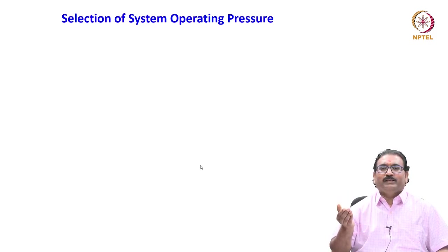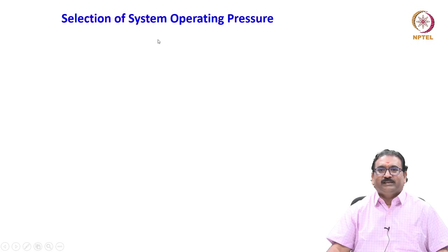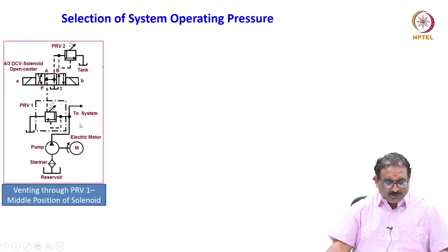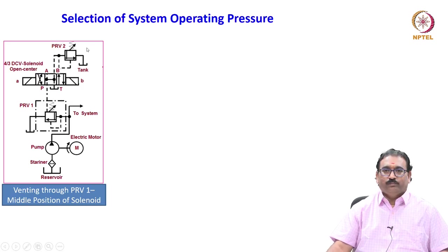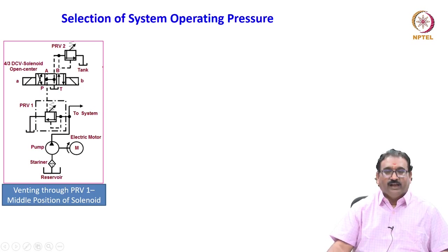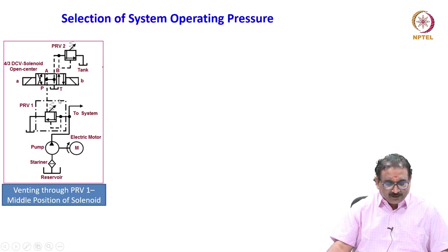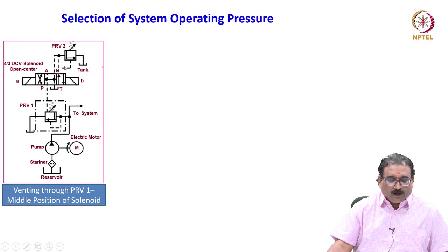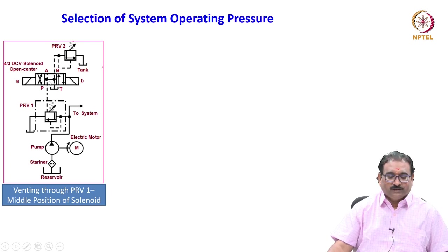Now, what I am showing you is one more: this pressure relief valve is controlled through the pilot. I will show you how it works with one more circuit — selecting the system operating pressure. Here, this is PRV 1 and this is PRV 2, both set at different pressures. Quickly identify the elements: the reservoir, strainer, pump driven by the electric motor, going to the system. PRV 1 is controlled pilot-operating from the 4-by-3 solenoid-operated open center valve — meaning all ports are interconnected in the middle position. Small a and b are the solenoids.